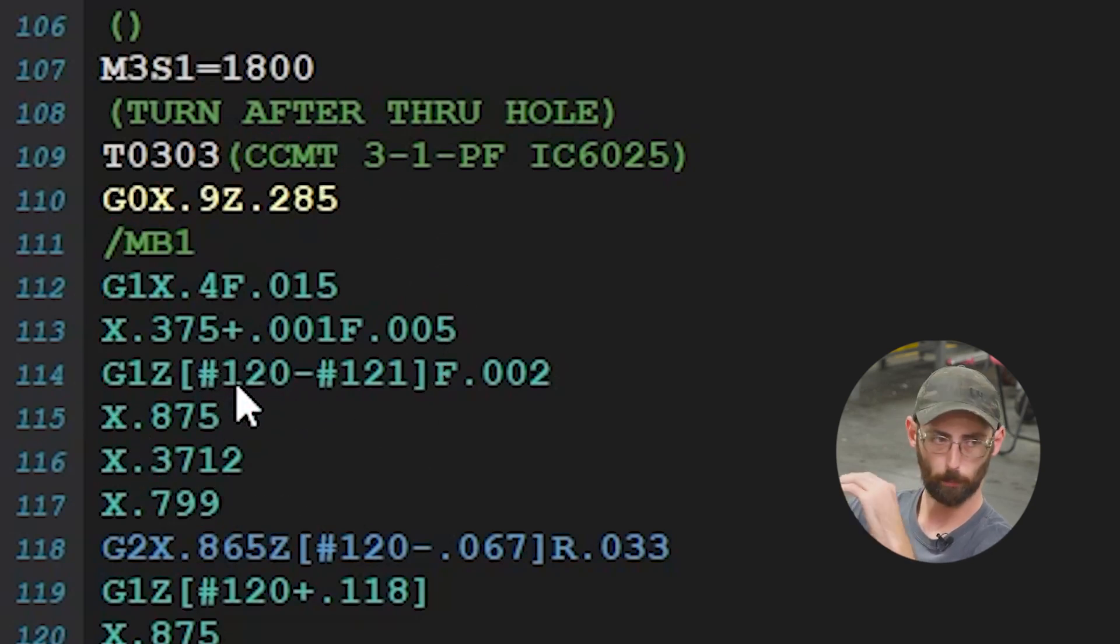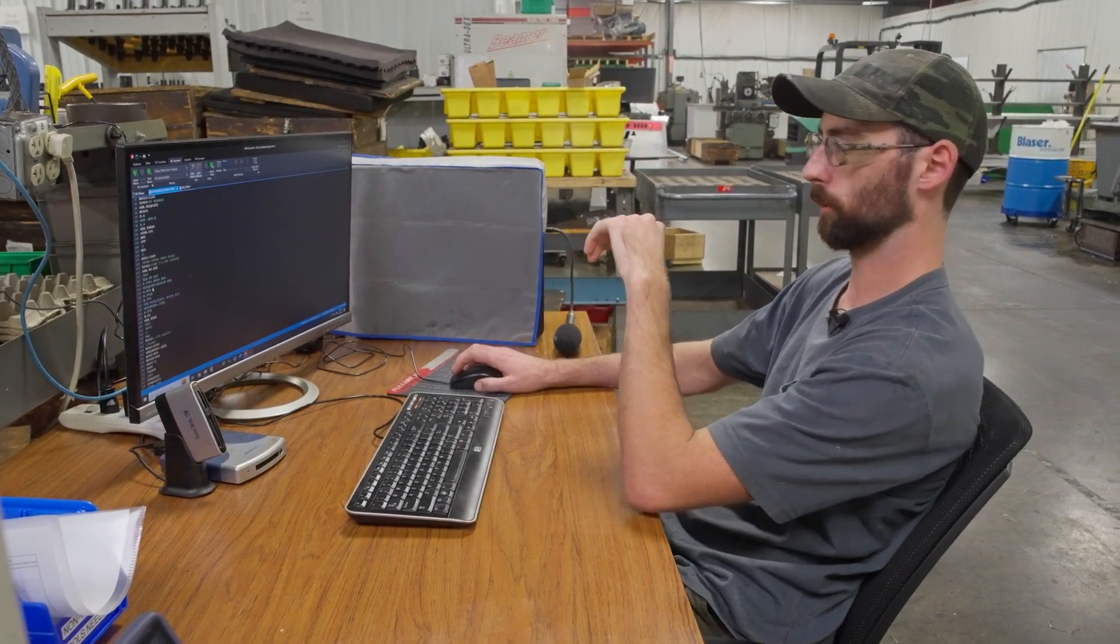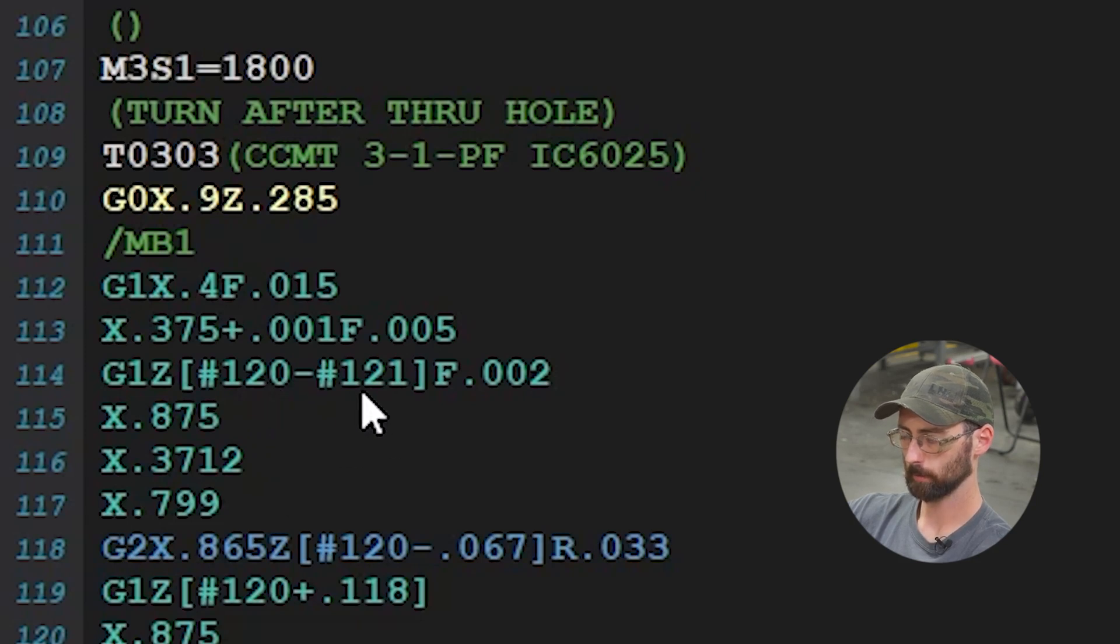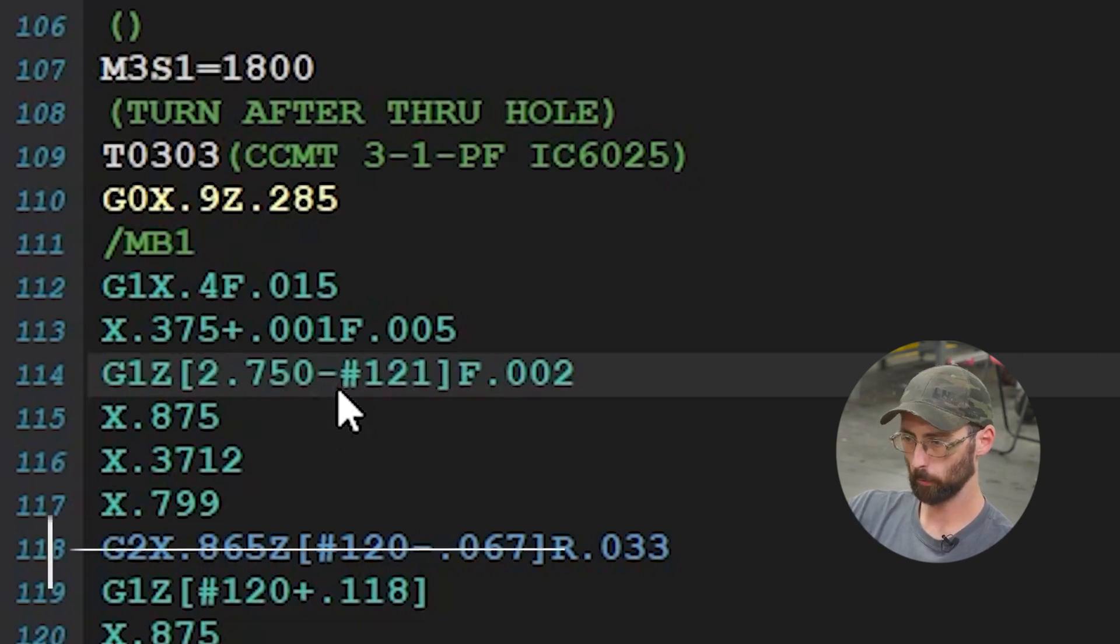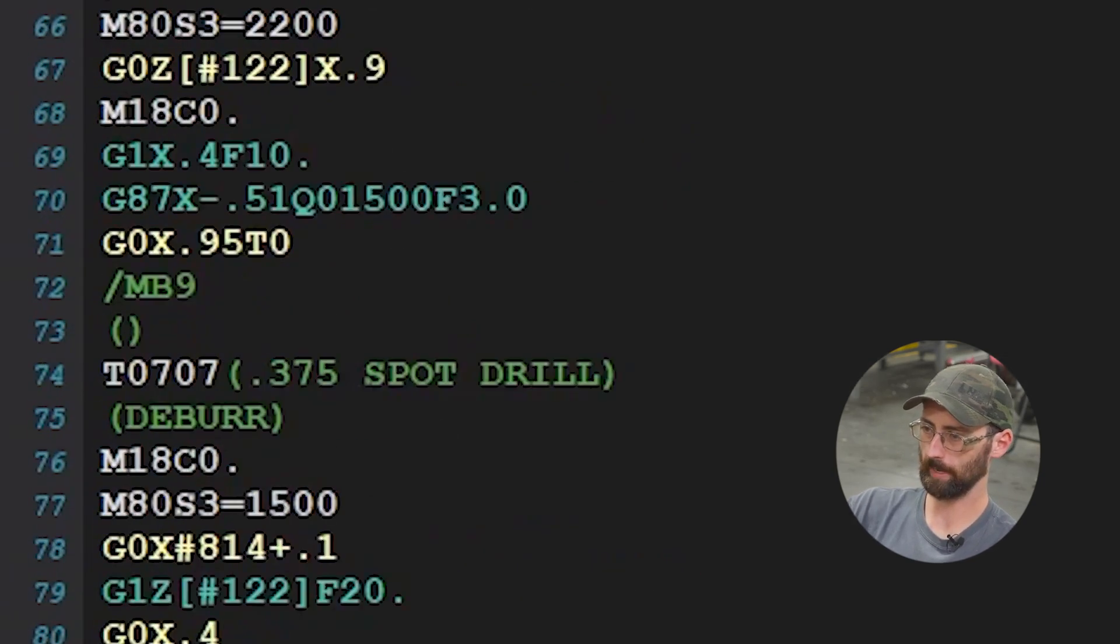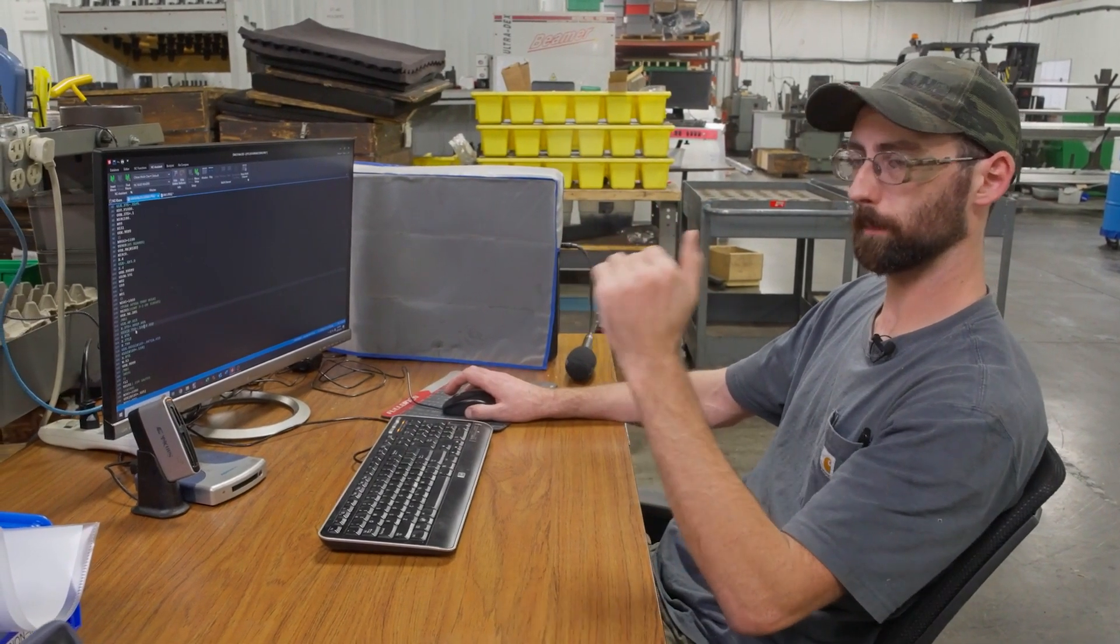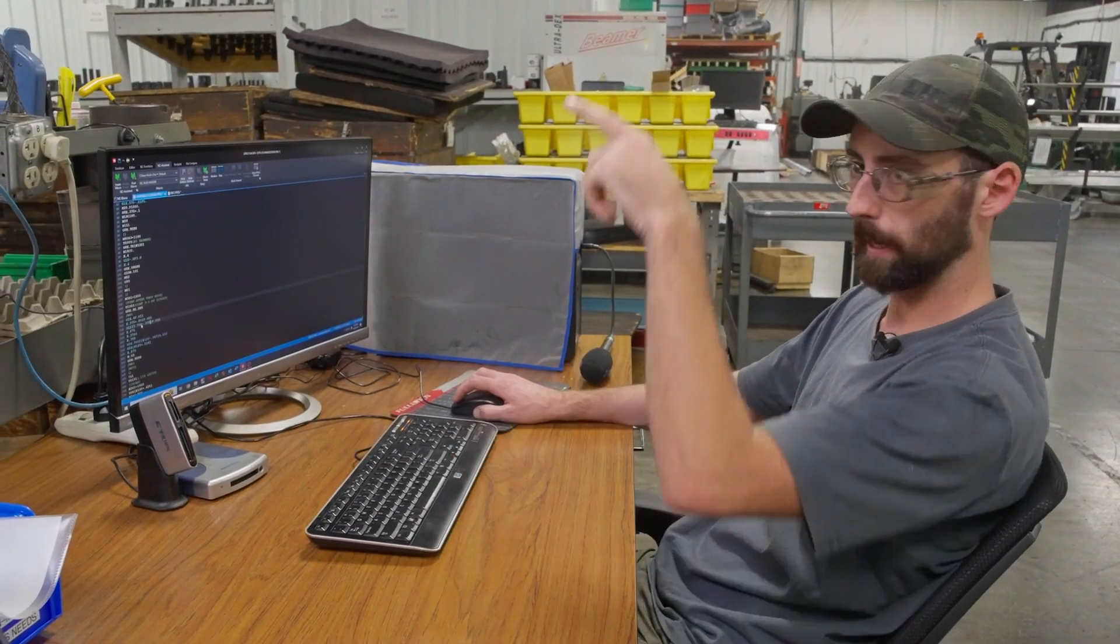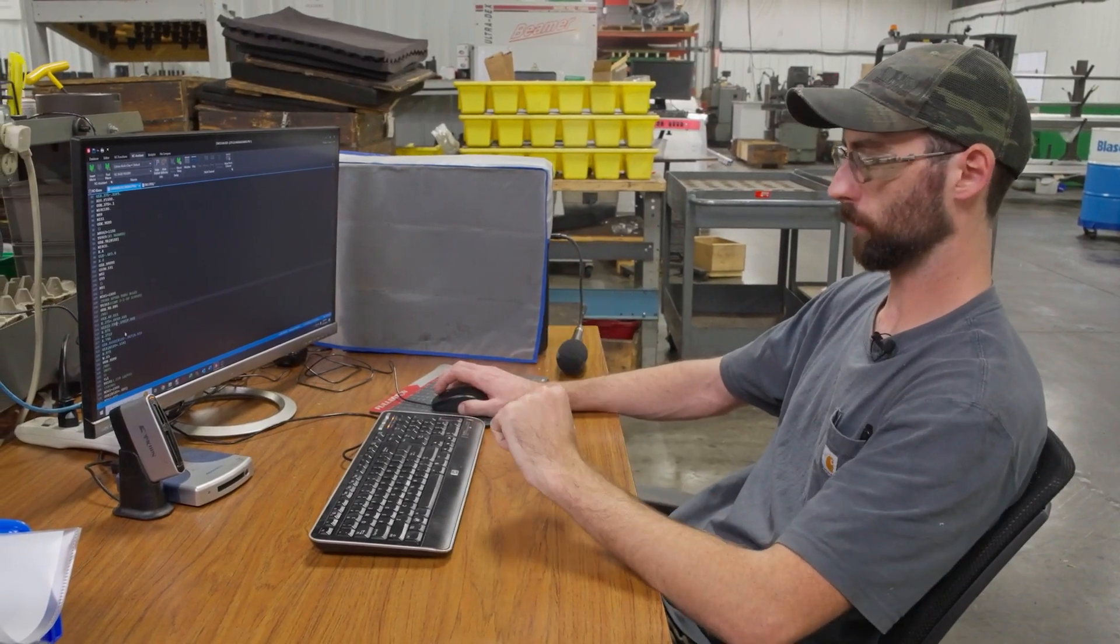Here's our turn length. This lets you run different length parts with the same program, just changing a variable. We're using #120, our overall length. If you see screen captures of our programs with #120, it's usually the overall length. So we've got #120 minus #121, our head thickness. Every time we wanted to change the part, we would have to change all these values. It's easier to just change them in one spot.